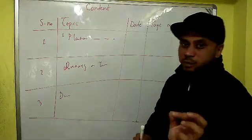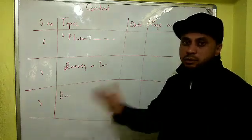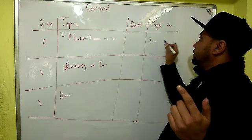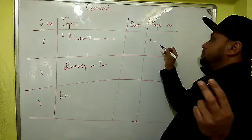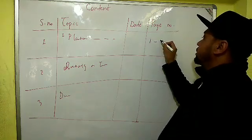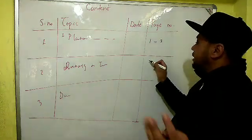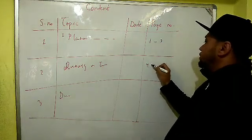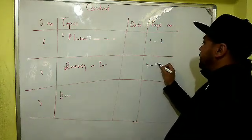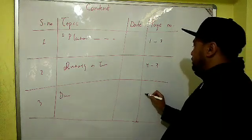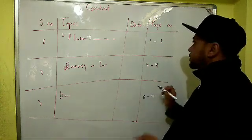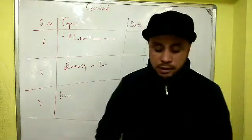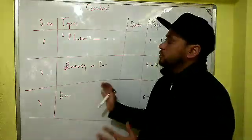The fourth column is the page number. Don't count the contents page as page one — from where you start the project, that will be page number one. If you use three pages for the first project, that's pages one, two, three. The next project starts from page four. If you need three more pages, that's four, five, six, seven, or if you need only two pages, write eight and nine.